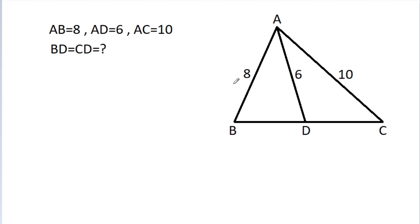In this video, we have given that AB is 8, AD is 6, and AC is 10. Then BD is equal to CD is equal to what?